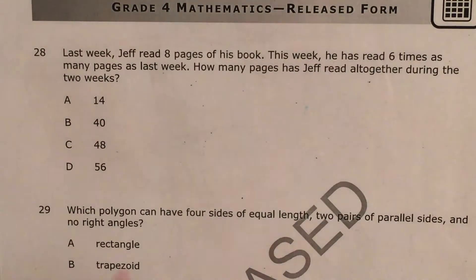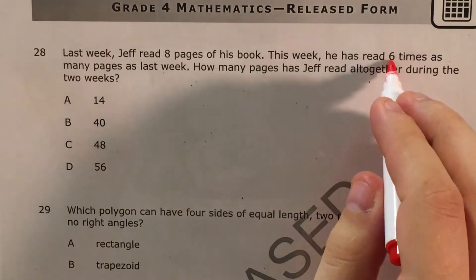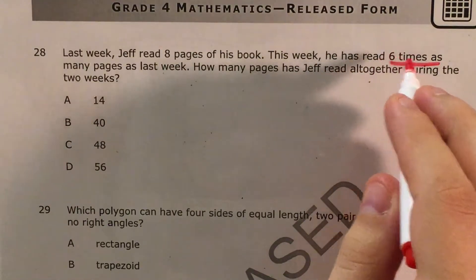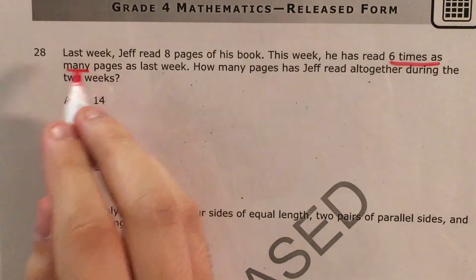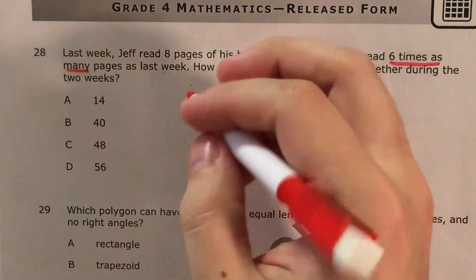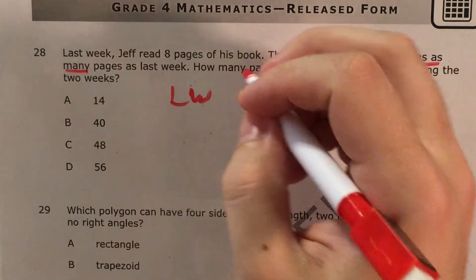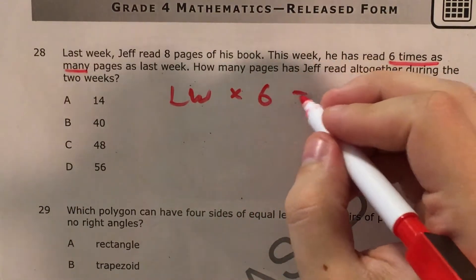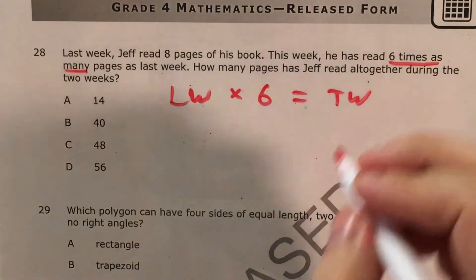I can see that if I look right next to my number six here, this actually is six times as many. So that means that if I have this week he's read six times as many pages as last week, then I need my last week number, I need to multiply it by six, and I'll get my this week number.